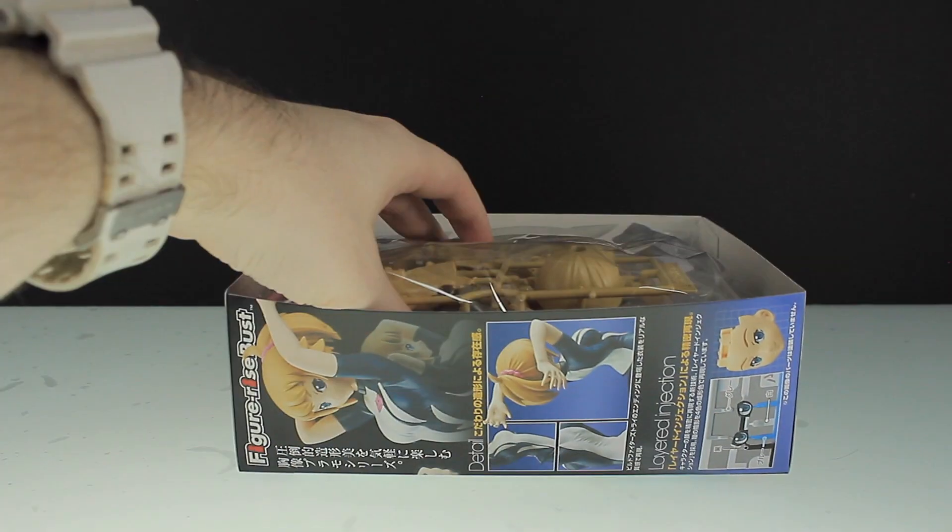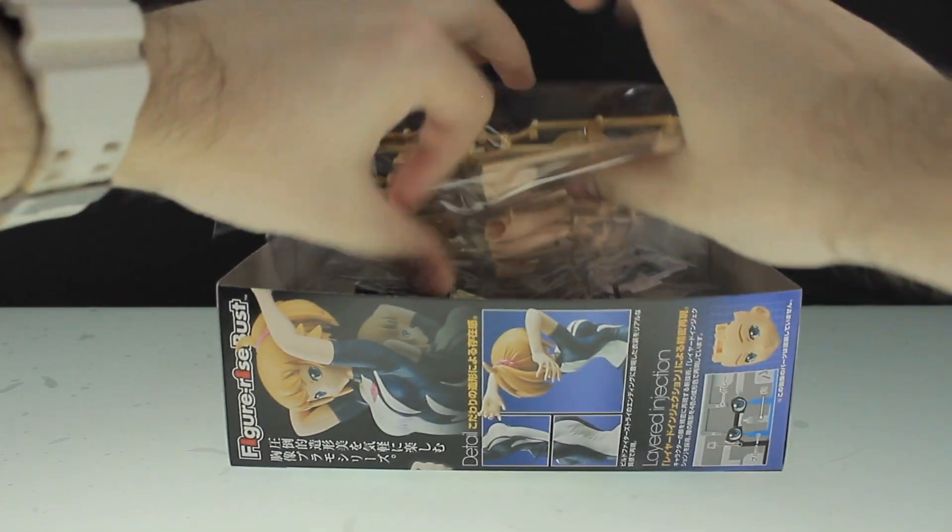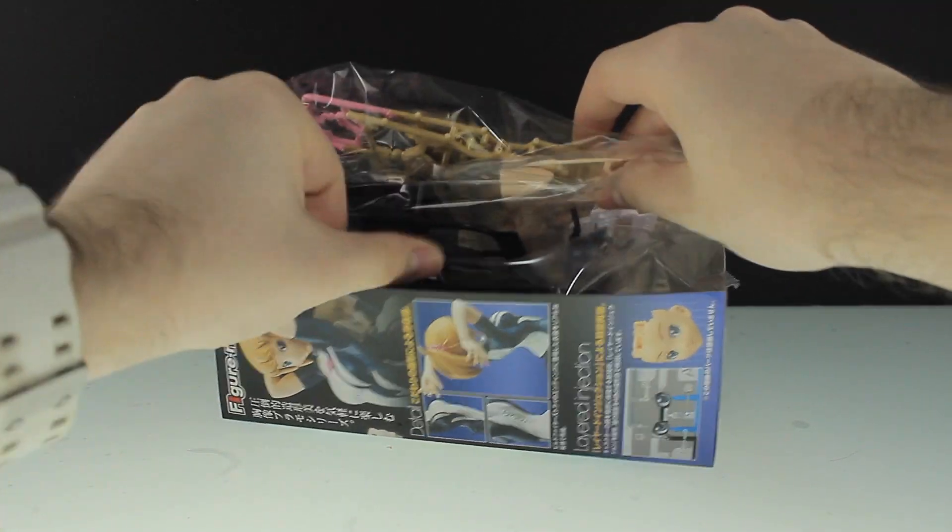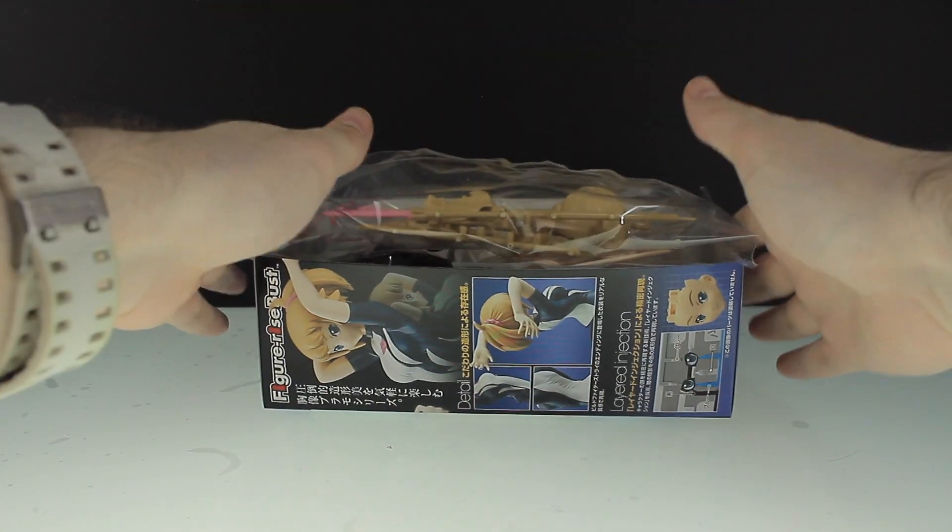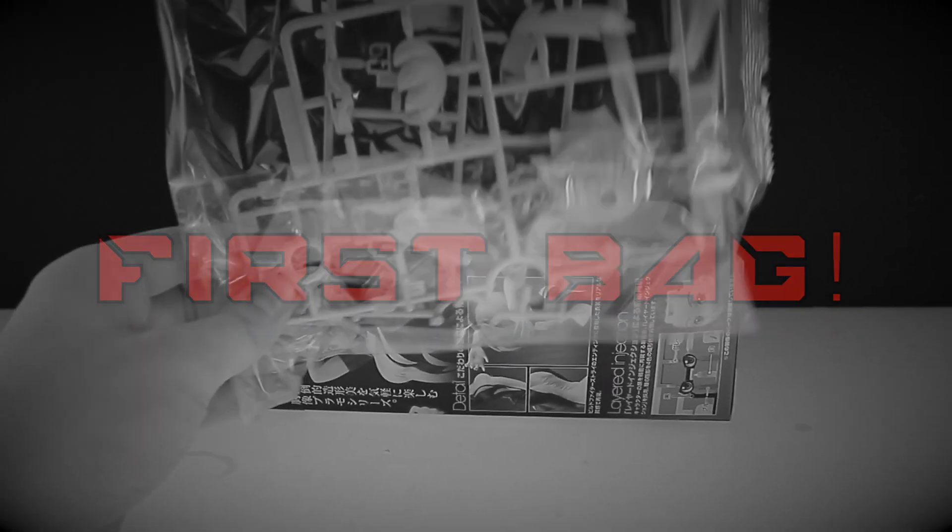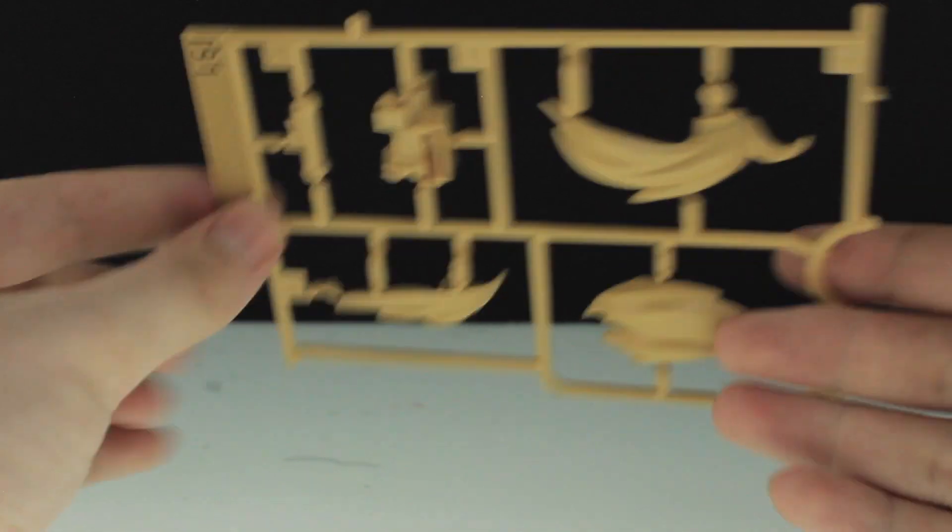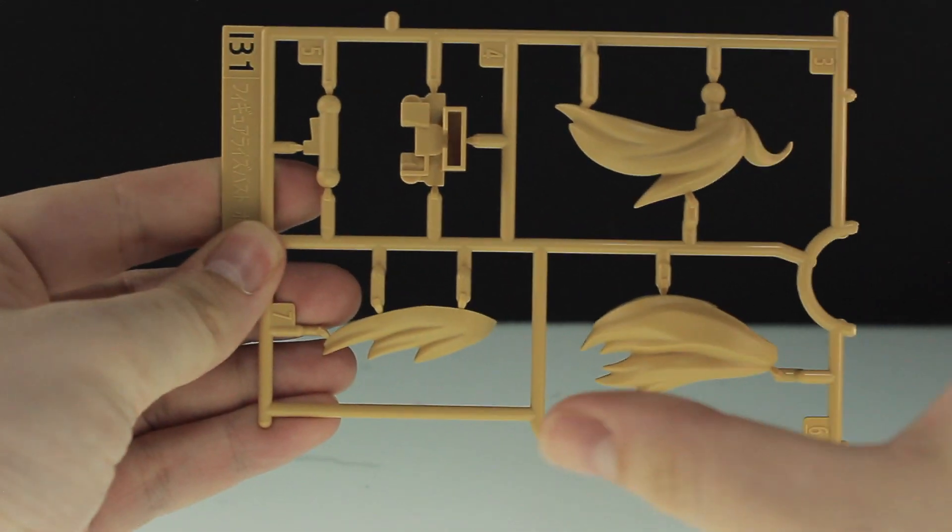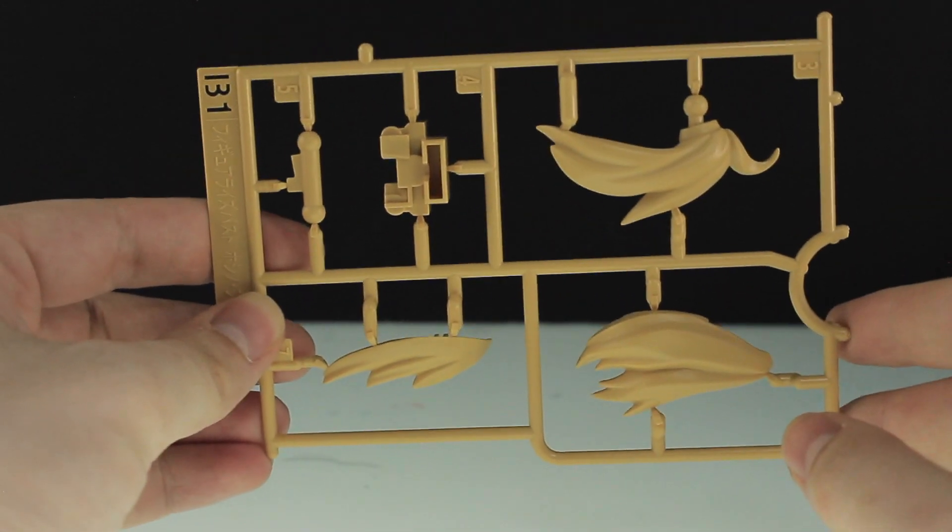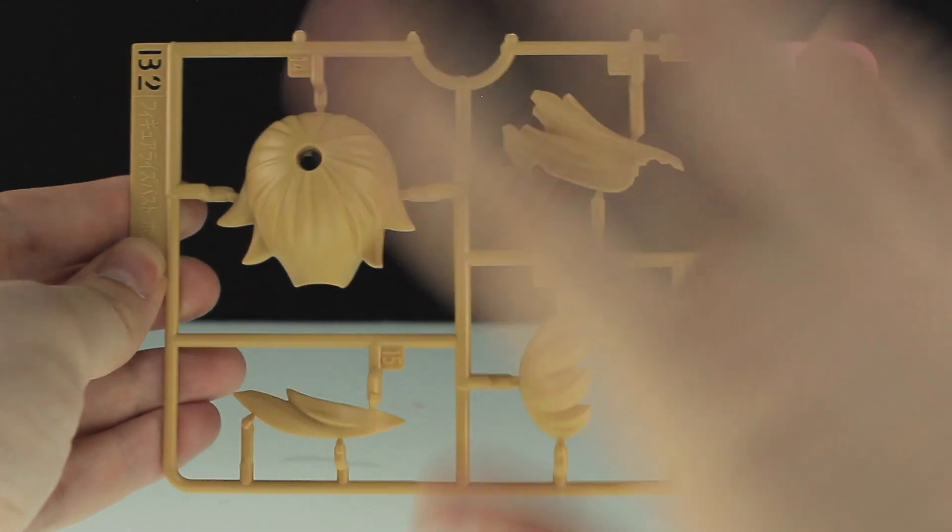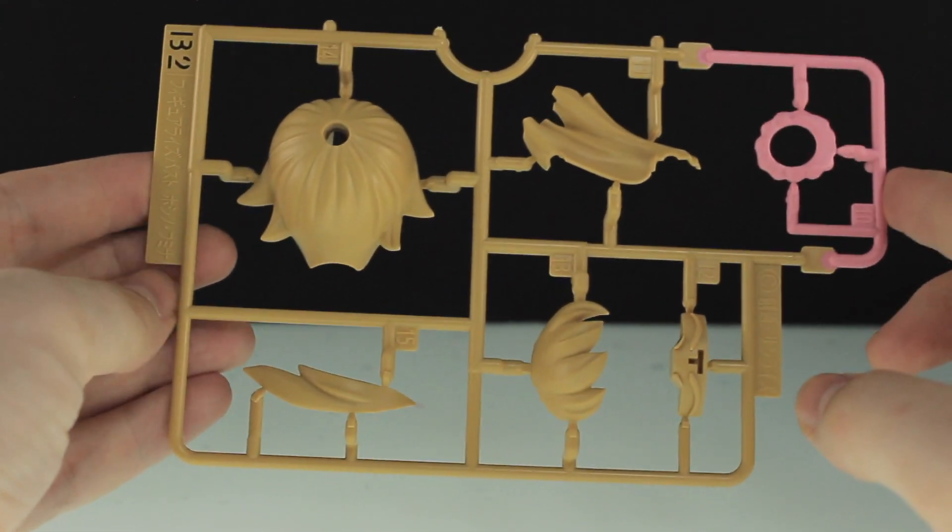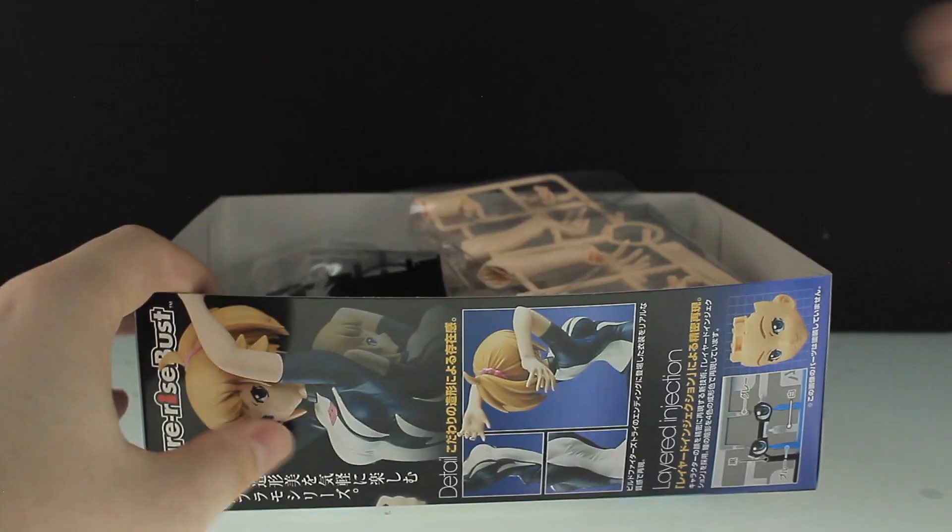So anyway, let's move on to the runners themselves. In the box we have one, two, three, four, five different bags. Let's move on to the first. The first runner in here is runner B1, this is from 2016, so I assume this is the same as the other version of Fumina that came out before. Next up then is runner B2, again more hair parts as well as a pink section over here which is the hair tie or scrunchie or whatever that is.